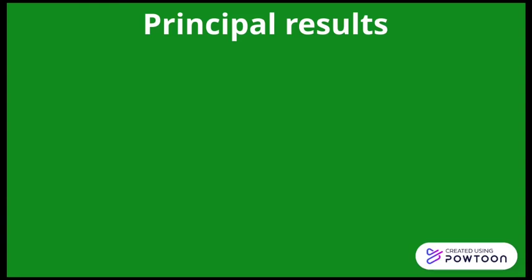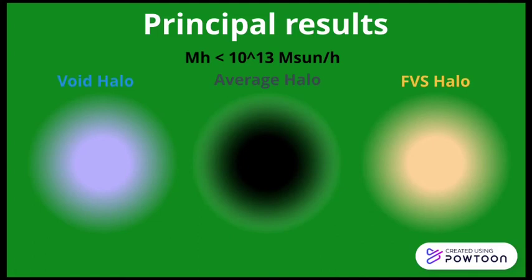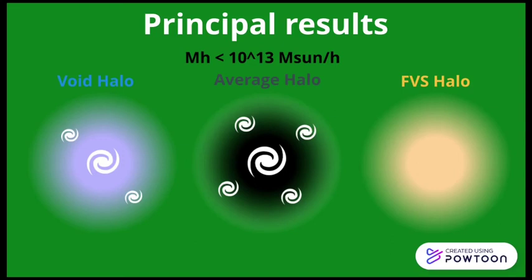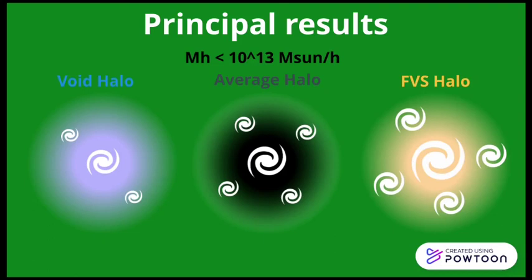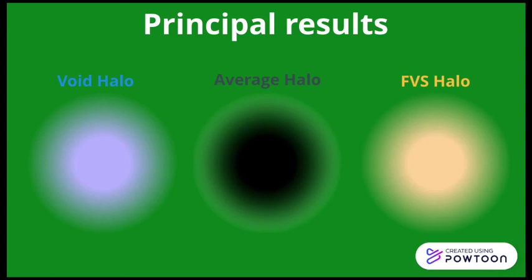As final summary, for example, we take a halo with mass lower than 10^13. In normal conditions, they have a central galaxy with some satellites. But inside the void, the same halo has a central galaxy with a few less stellar masses with a reduced number of satellites with lowest stellar mass too. Meanwhile, in the FVS, the halos have the same number of satellites, but both the central and satellite galaxies have more stellar mass than the average.